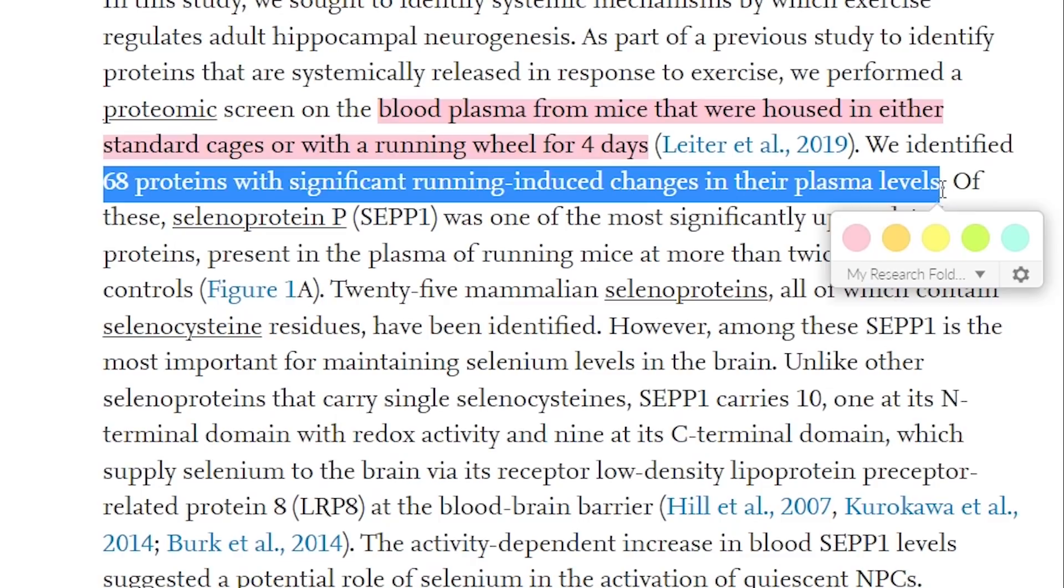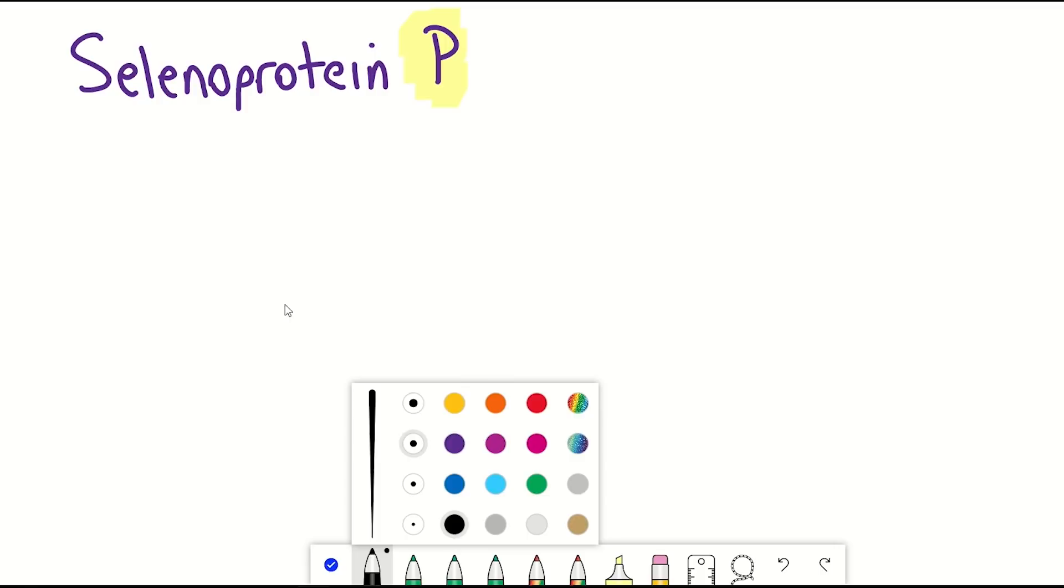So as hinted at by the name, selenoprotein P is indeed a selenoprotein. The unique feature about this selenoprotein though is that it actually contains 10 selenocysteine residues, whilst the others appear to just carry one. So could this be the cause for increased neurogenesis?